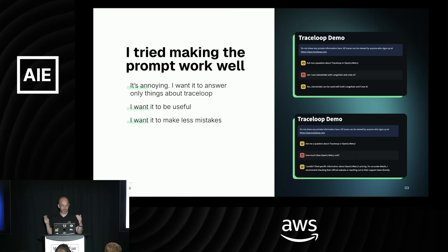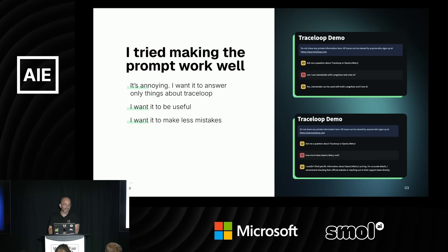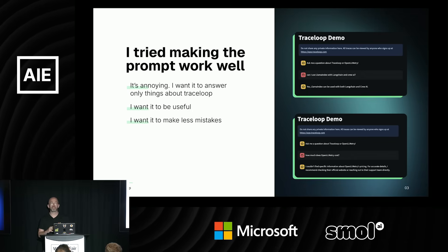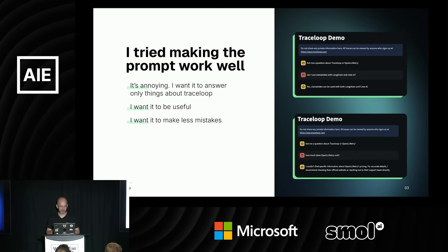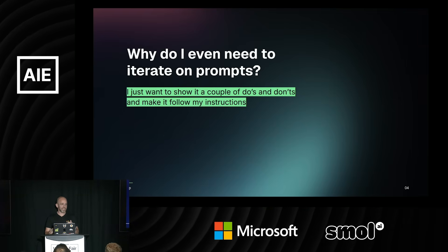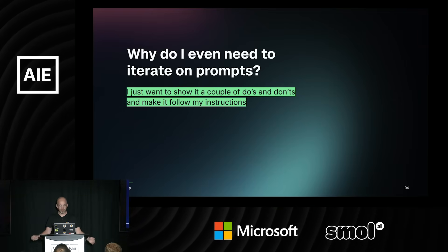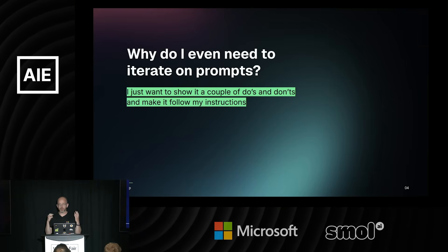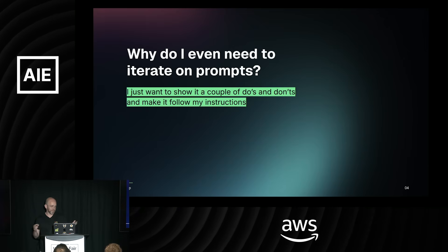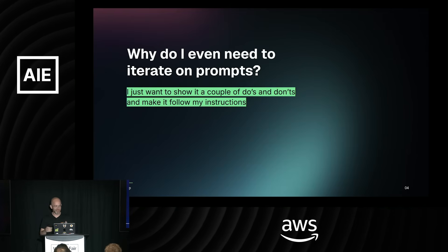I wanted it to be useful, so if someone asked a question I wanted the answer to be useful for the user. I wanted it to make fewer mistakes — it was making so many — and just get a little bit better. We were doing prompt engineering at this stage, but why do I even need to iterate on prompts? I just want to give it a couple of examples of good and bad and have it somehow learn how to follow my instructions properly.